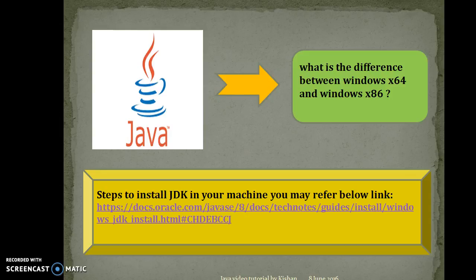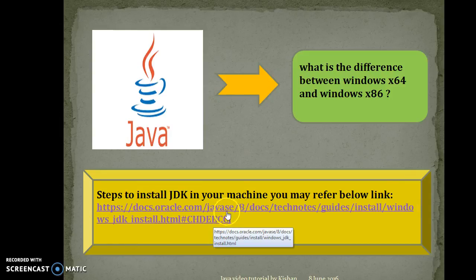If you haven't installed JDK on your machine, you first need to download JDK from the Oracle website. To install JDK, you can refer to the link provided — it gives you a step-by-step guideline to install JDK on your machine.